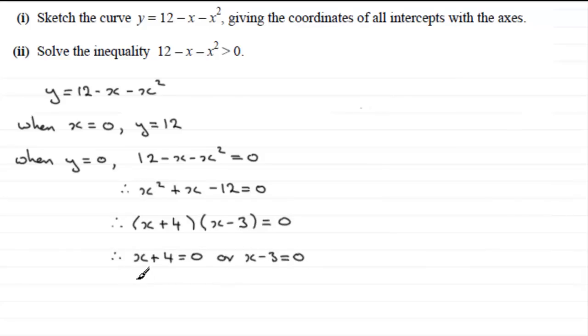So that means that therefore x plus 4 would equal 0 or x minus 3 would equal 0. Each of those factors has to equal 0. And for this first one, if I subtract 4 from both sides, I see that x equals minus 4, and if I add 3 to both sides here, x equals 3. So I can see it crosses the x axis at these coordinates minus 4 and 3.